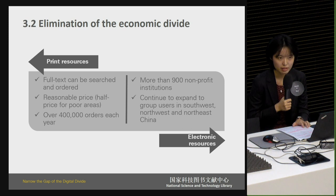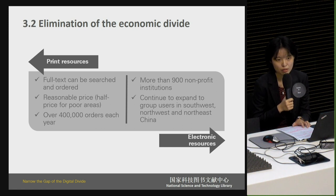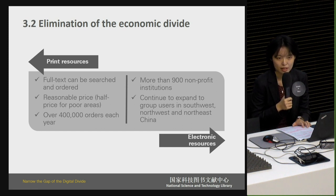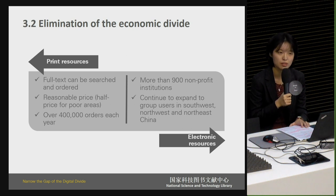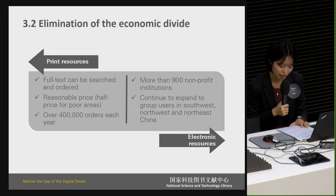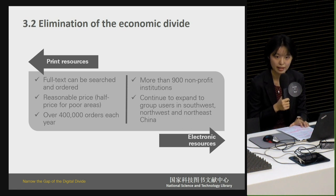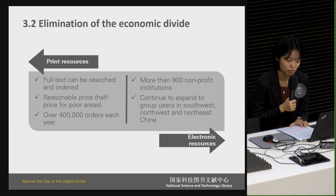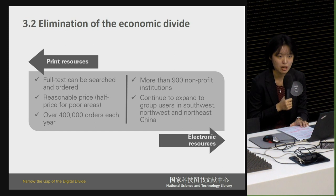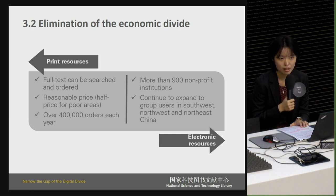Since NSTL is a non-profit institution, the price of document delivery service has been stable for several years, so that more users can access NSTL without financial burden. For electronic resources, there are more than 900 scientific research institutions, including universities and colleges in mainland China, that have applied for access to NSTL electronic resources. NSTL is continuing to expand to qualified non-profit organizations in southwest, northwest, and northeast China, so that resources can be shared and the economy of scale maximized.